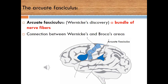The fourth part is called the Arcuate Fasciculus. It is a bundle of nerve fibers that connects Wernicke's area and Broca's area. You can see this part in the figure in the slide.